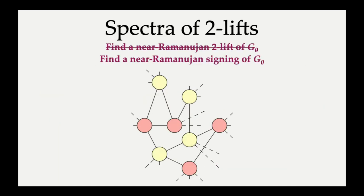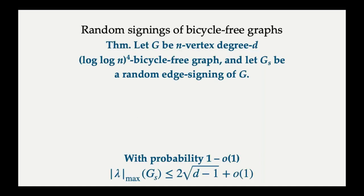So now our first attempt is going to be: let's understand what happens if we take a graph G₀ and randomly sign all of its edges. And indeed, we're able to show that with high probability, a random signing does give us a matrix with eigenvalues sufficiently bounded, where sufficiently bounded means they're all at most 2√(d-1) + o(1), as long as this graph has a high enough bicyclefree radius. So as you can see, the bicyclefree radius we need is like log log n to the 4th power.